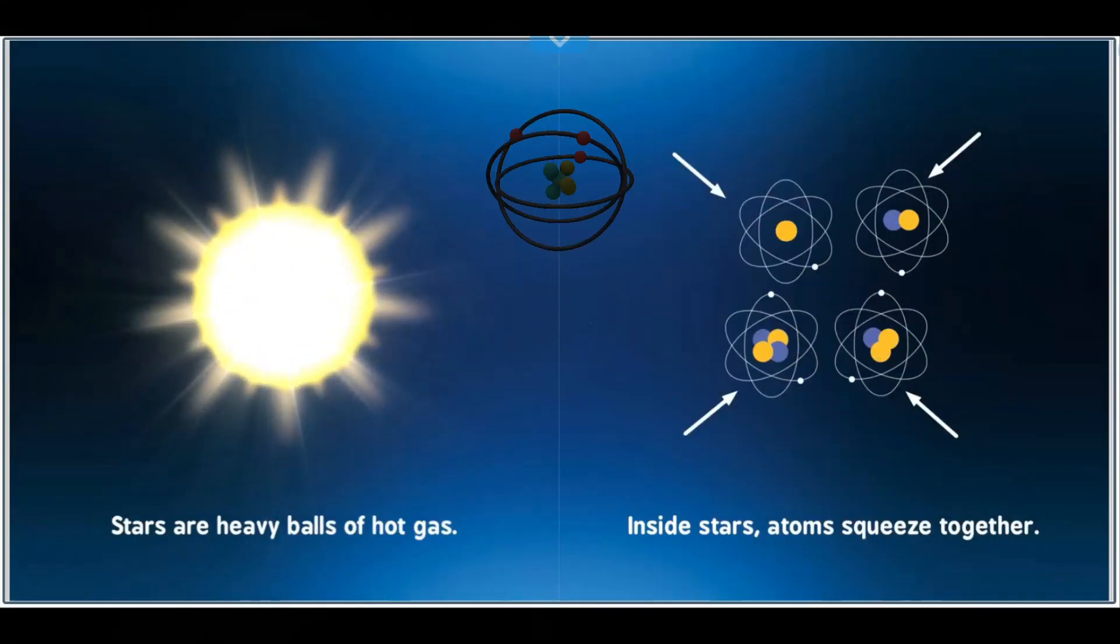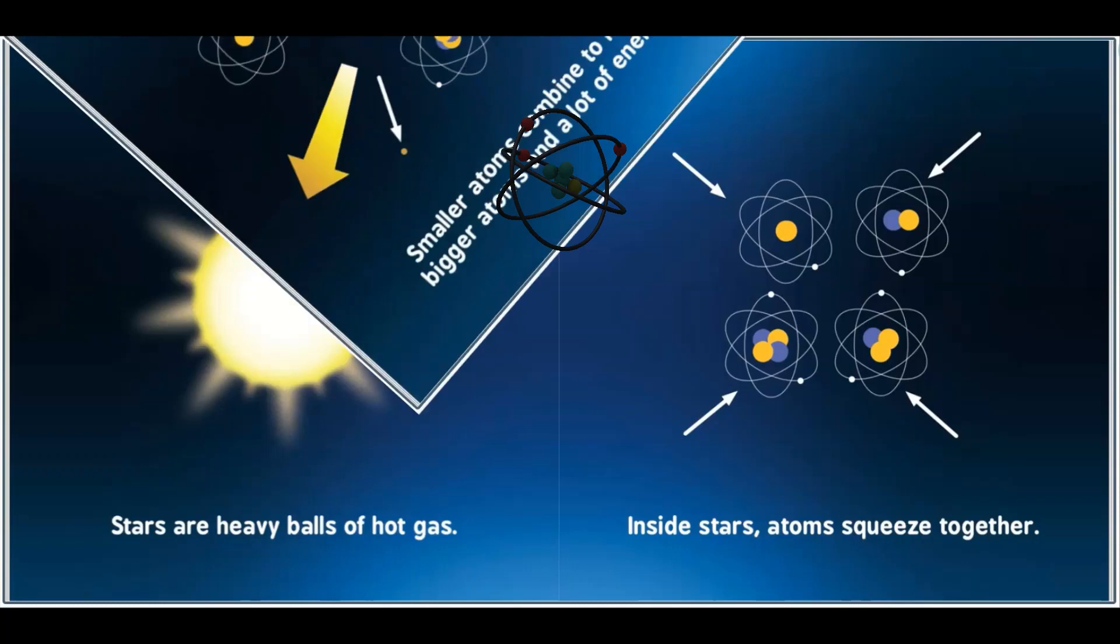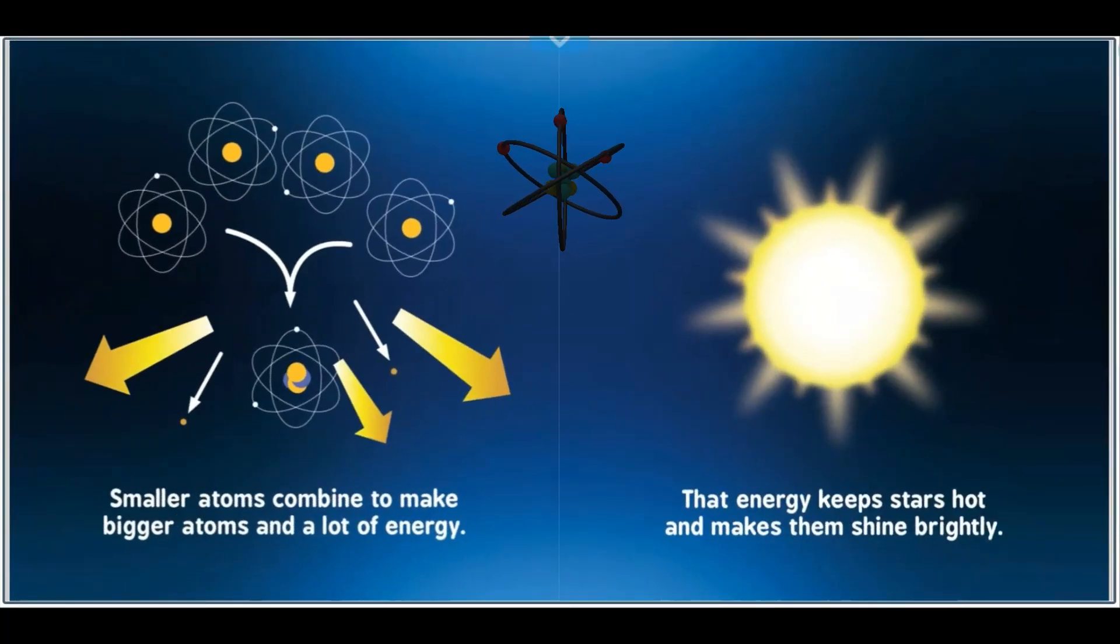Stars are heavy balls of hot gas. Inside stars, atoms squeeze together. Smaller atoms combine to make bigger atoms and a lot of energy. That energy keeps stars hot and makes them shine brightly.